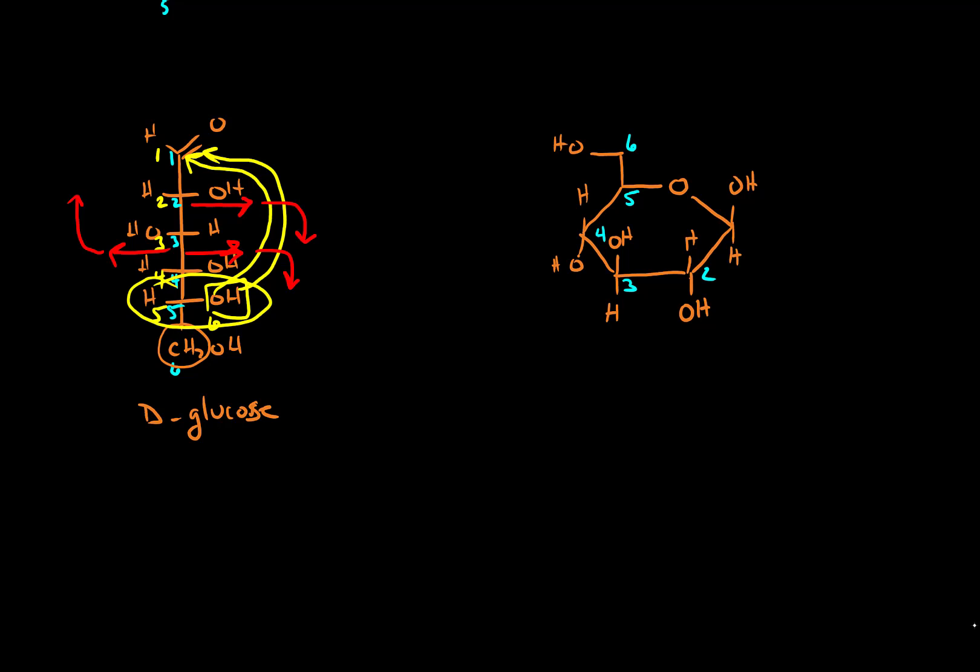So this is a complete ring structure of D-glucose. We now have a hexagon instead of a pentagon like we saw with D-ribose. It's important to make sure you understand how to get the orientation of the alcohol groups in this ring structure.